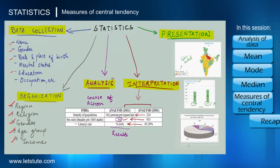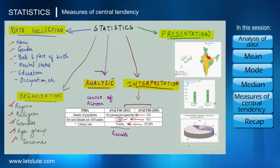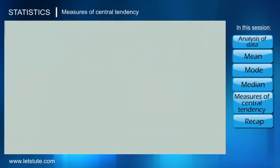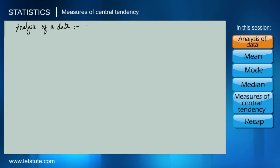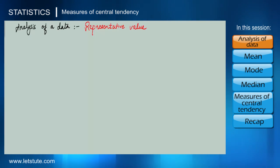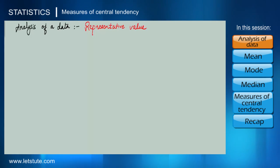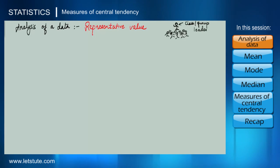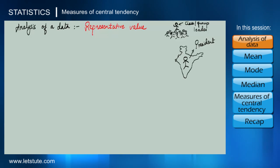Hey everybody, in our previous session we learned all the steps involved in statistics, and today we are going to learn the analysis part of statistics. In analysis, we are going to take a data set and learn about a representative value — one that represents the whole data set, just like a group leader or class leader represents the whole class, or a president represents the whole country.